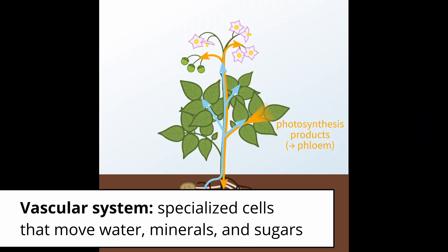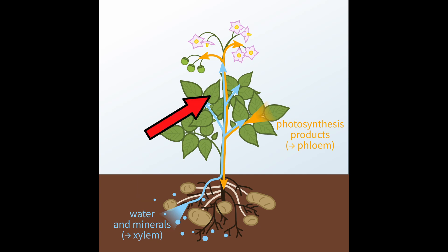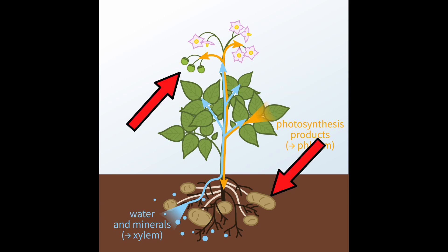The two main components of a vascular system are the xylem and the phloem. The xylem moves water and inorganic substances from the roots up to the top of the plant, to the leaves. Whereas the phloem moves sugars from wherever the sugars are made through photosynthesis to wherever they're needed.